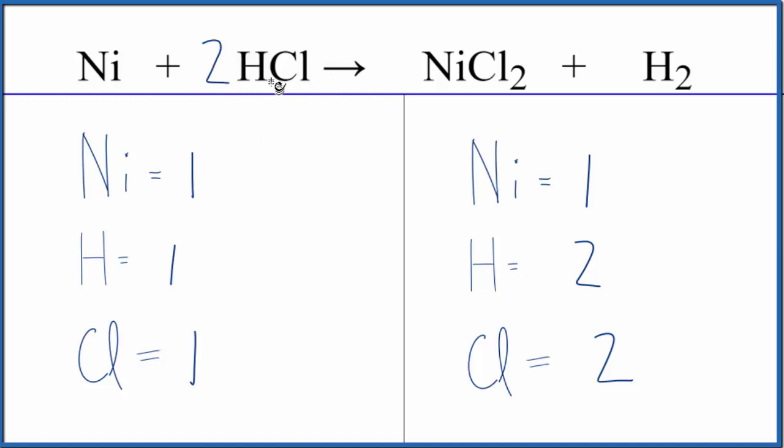This two applies to everything here. So we have one hydrogen times the two, that'll give us two. Hydrogens are balanced. And then one chlorine here times the two, that'll give us two. Those are balanced, and we're done.